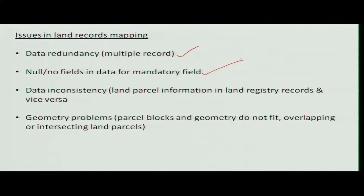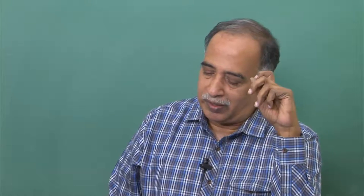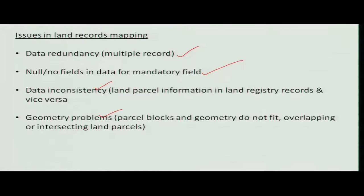Data inconsistency means we have to identify each data field that is missing. If data is collected separately to fill those gaps, the record becomes complete. Another major issue is the geometry problem — parcels do not match with each other or with adjoining parcels, which is a major headache in this type of activity.